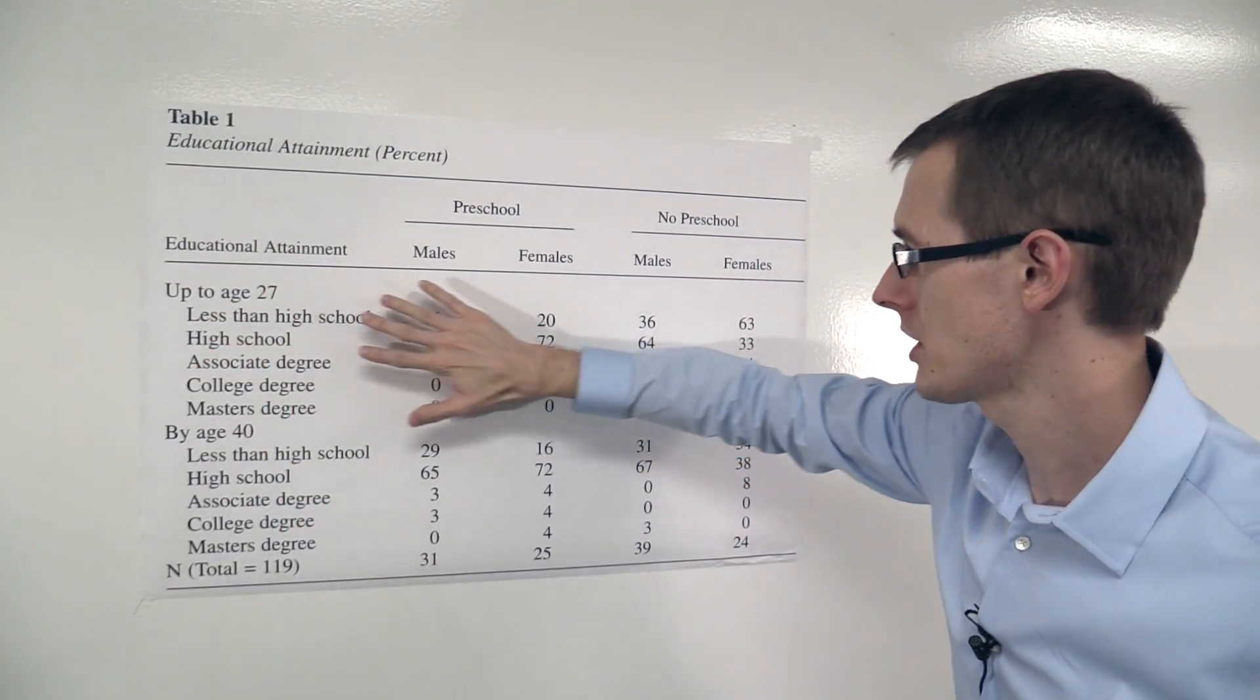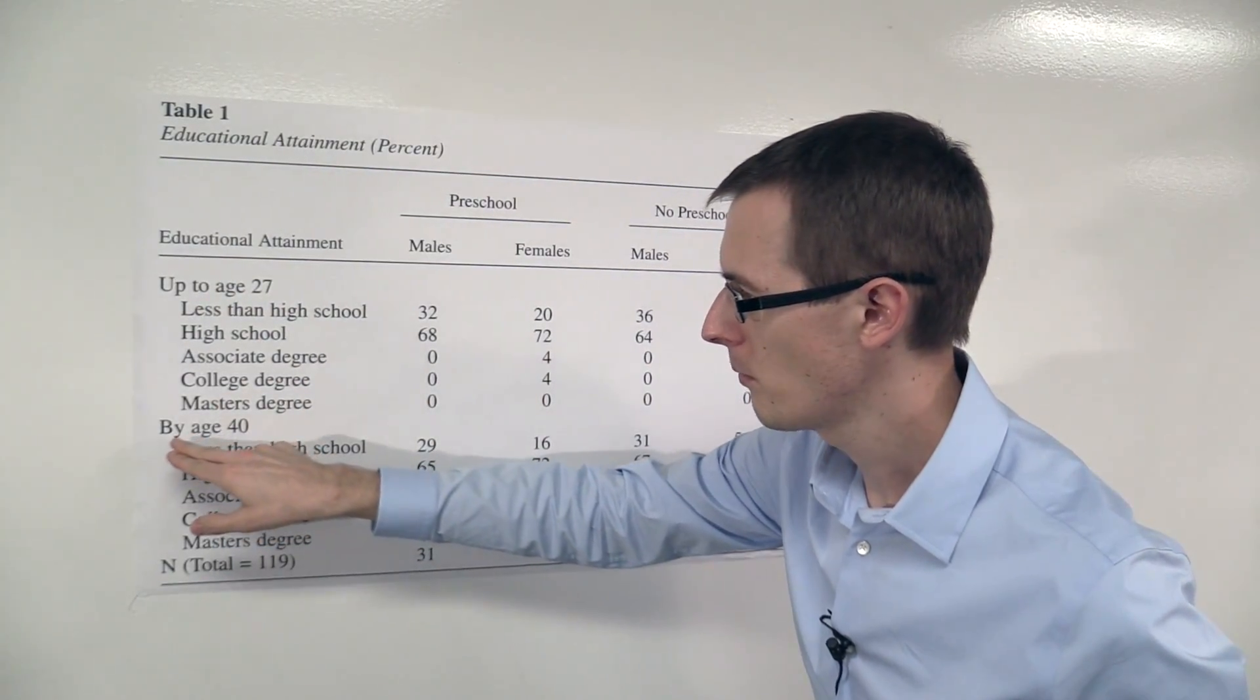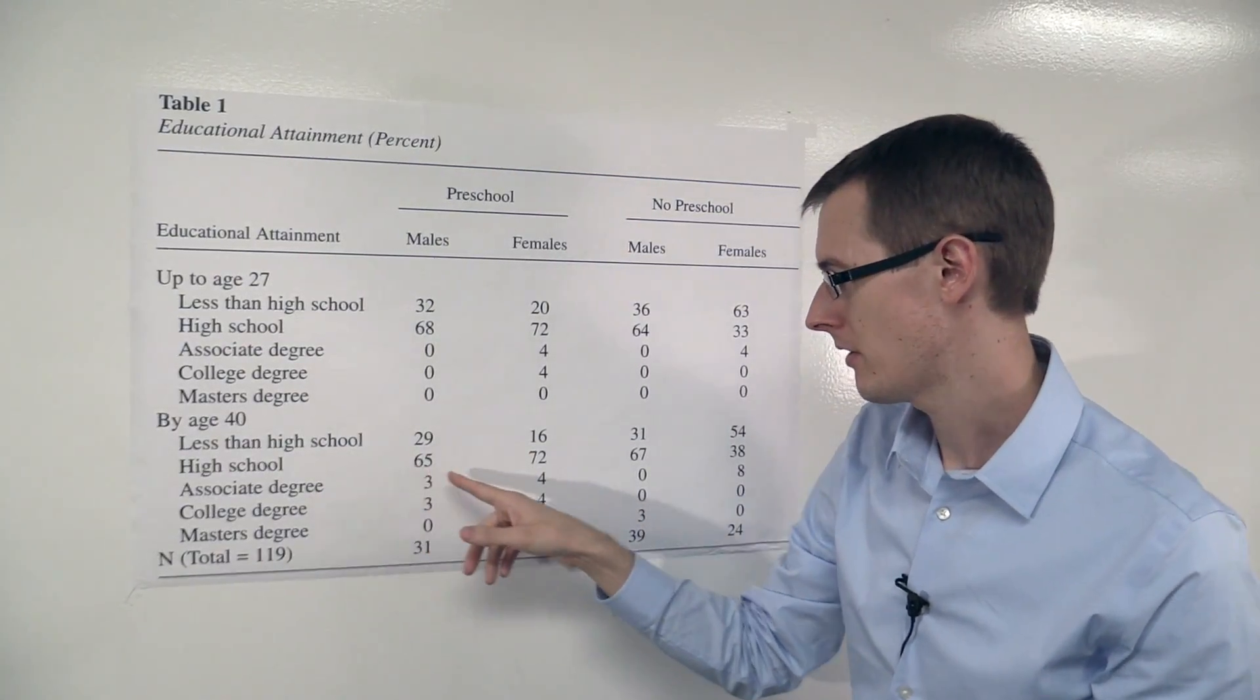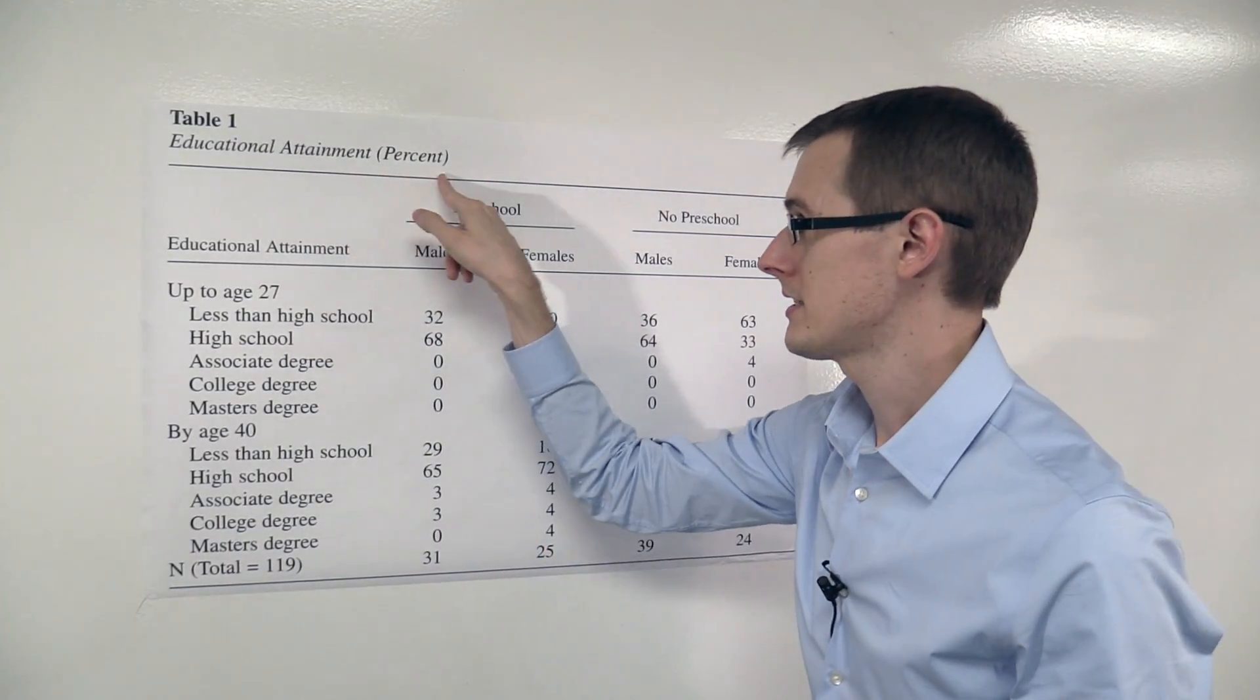So now let's just ignore this first one because that's older data. Let's look at, by age 40, how much education did these students have? And these numbers here are going to be percentages of students.